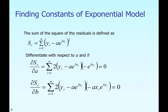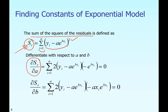We follow the same principle: we find the sum of the squares of the residuals. We square each residual, add them all up, and that gives the sum of squared residuals. What we want to do is minimize this sum, and the way to do it is to take the derivative of the residuals with respect to a and b — the constants of the model — since y_i and x_i are fixed and a and b are the only things we can change.